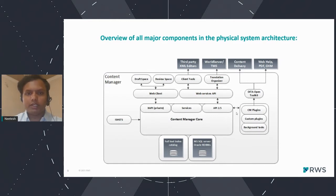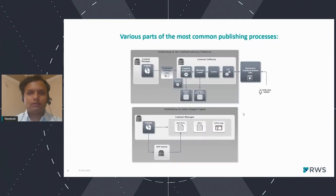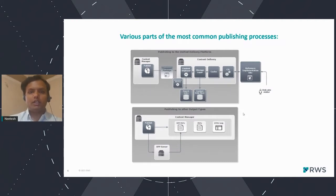Here is the architecture — you can find this in our documentation as well. This is the typical structure of the content manager. We have core API services, CM plugins, custom plugins, and background tasks. We are going to customize the publishing, so we will be making some changes on the publish plugin. Those are also DataOT as well.